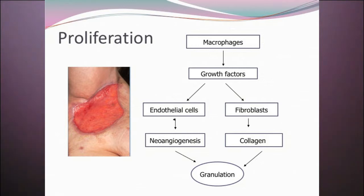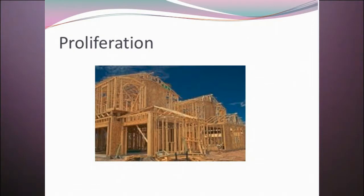Healthy viable granulation tissue should be beefy red — red velvet in appearance — and very viable. This process may take days to weeks, sometimes even months, depending on the patient's health, the location of the wound, and the adequacy of blood supply. During this very active time, the body is actively creating new granulation tissue to fill in the defect in the skin and restore integrity. A good analogy is a building process: the new capillary system is the plumbing to feed the tissue, and the collagen forms the walls and structure. Together they make up granulation tissue.